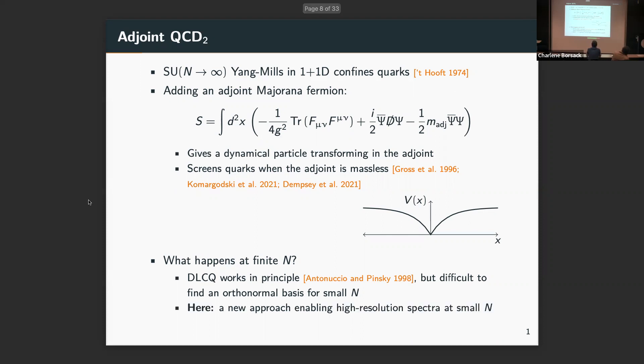There are some difficulties in getting an orthonormal basis of physical states in a way that I'll describe. Here I'll show how we can actually circumvent this problem and use DLCQ to get high-resolution spectra for these theories at finite N and very small N, SU(2), SU(3) sort of theories.